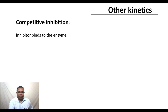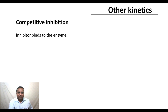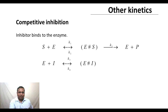The first inhibition we are going to look at is called competitive inhibition. In this case, the inhibitor inhibits the reaction by binding to the enzyme and thereby providing competition to the substrate in the process of binding to the enzyme. In other words, the reaction scheme is like this.